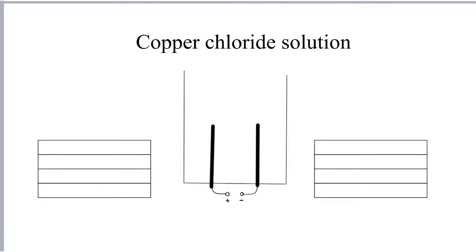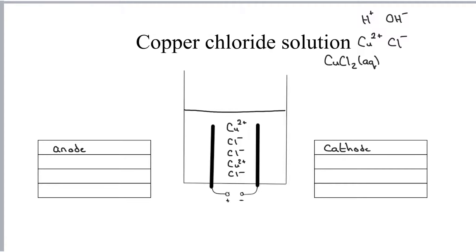So copper chloride solution — that is a straightforward example. It's copper 2 chloride, so copper is Cu2+, chloride is Cl-, so we could write its formula as CuCl2(aq). Also present is of course water. Water will split up to give H+ and OH- ions. But in this example we won't worry about those because copper chloride simply splits up to give copper and chlorine — it acts in pretty much the same way as a molten ionic compound would.